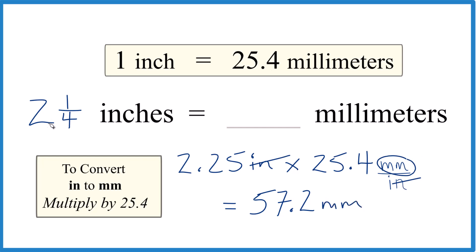In answer to our question, two and one-fourth inches, or 2.25 inches, equals 57.2 millimeters.